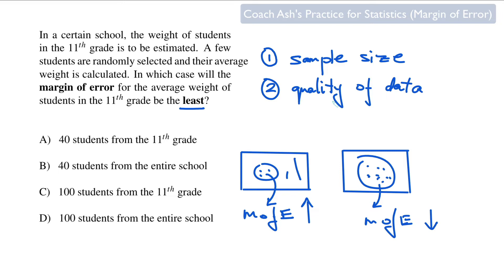The second factor that affects the margin of error is the quality of data. If you're trying to estimate the average weight of students, you should be measuring the students' weights, not some adults' weights. The sample population — the type of people you're weighing — should actually be students and not adults, athletes, or actors. A large sample size reduces the margin of error, and better quality of data also reduces the margin of error.